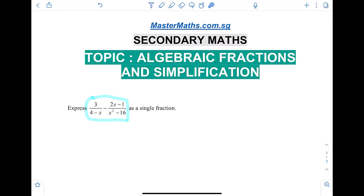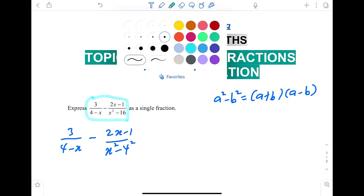4 minus x also can't factorize, but this guy right here can be factorized. You can use a squared minus b squared special formula to factorize your second denominator. So we have 3 over 4 minus x, minus 2x minus 1 over x squared minus 4 squared.